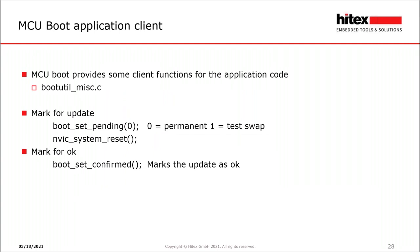In the application code, we can include a small client — boot_util_misc.c — which provides a couple of functions. We can set an upgrade as pending, specifying either a permanent upgrade or a test swap, which reboots to check the upgrade was managed successfully. We can then force a system reset to invoke the bootloader to perform the upgrade. If doing a test swap in the new image, we call boot_set_confirmed to mark the upgrade as successful and make it permanent. If the code fails and the device reboots without confirming, it rolls back to the earlier version.